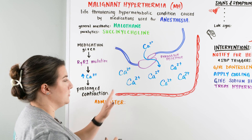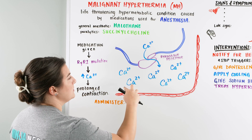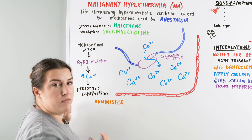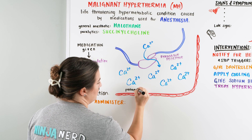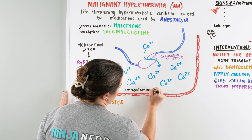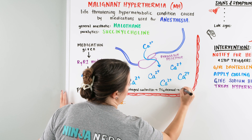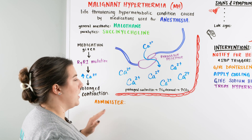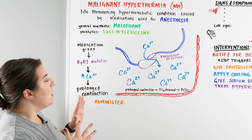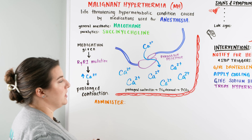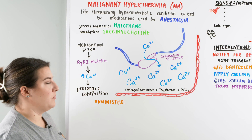That prolonged contraction causes the muscles to go rigid — they're not able to do any movement and look very tremorous. Because of this, there is an increased consumption of oxygen. Due to that prolonged contraction, O2 demand goes up and CO2 increases. The patient's heart rate shoots up, they become very hot, and they struggle to blow off CO2, leading to metabolic acidosis — which is dangerous, similar to what we see in DKA.